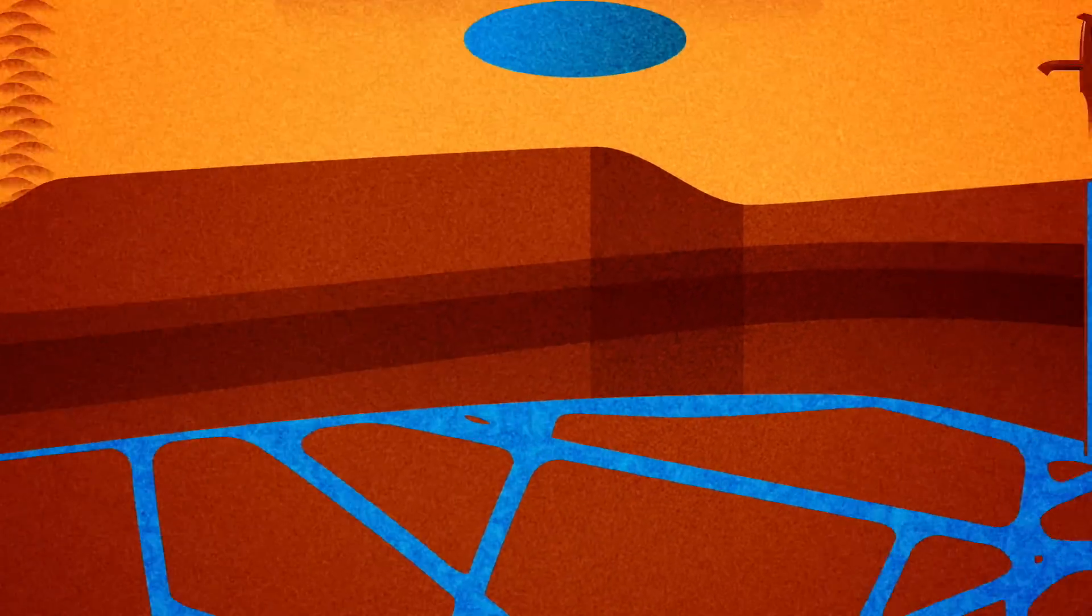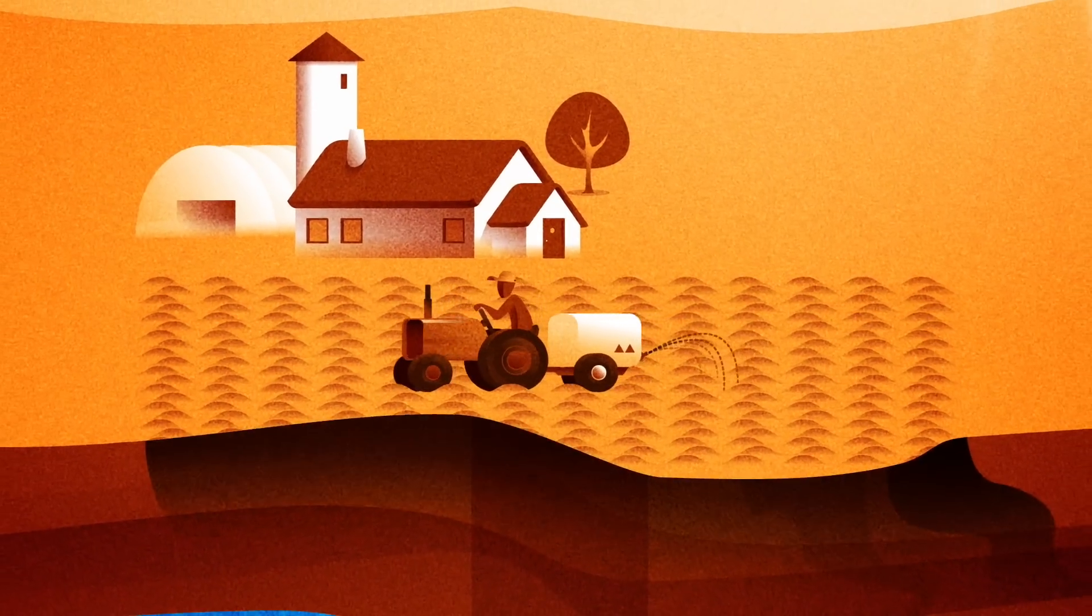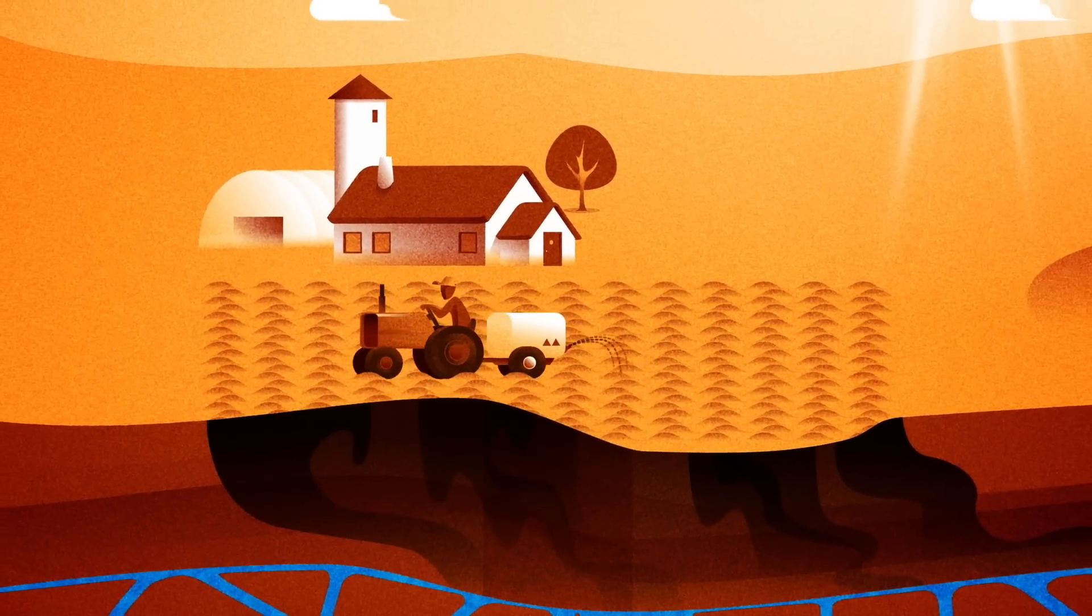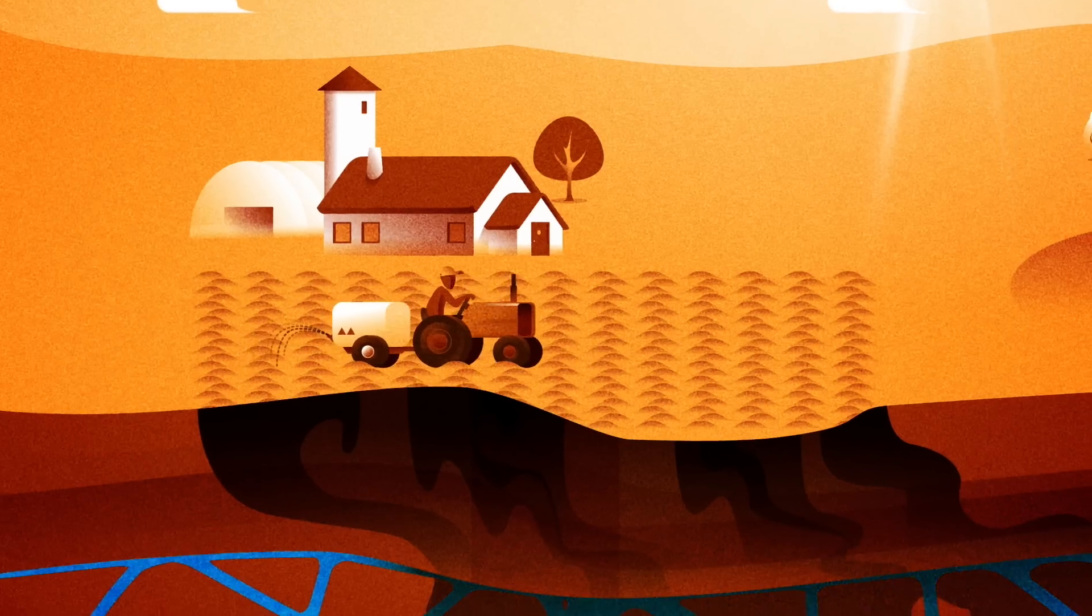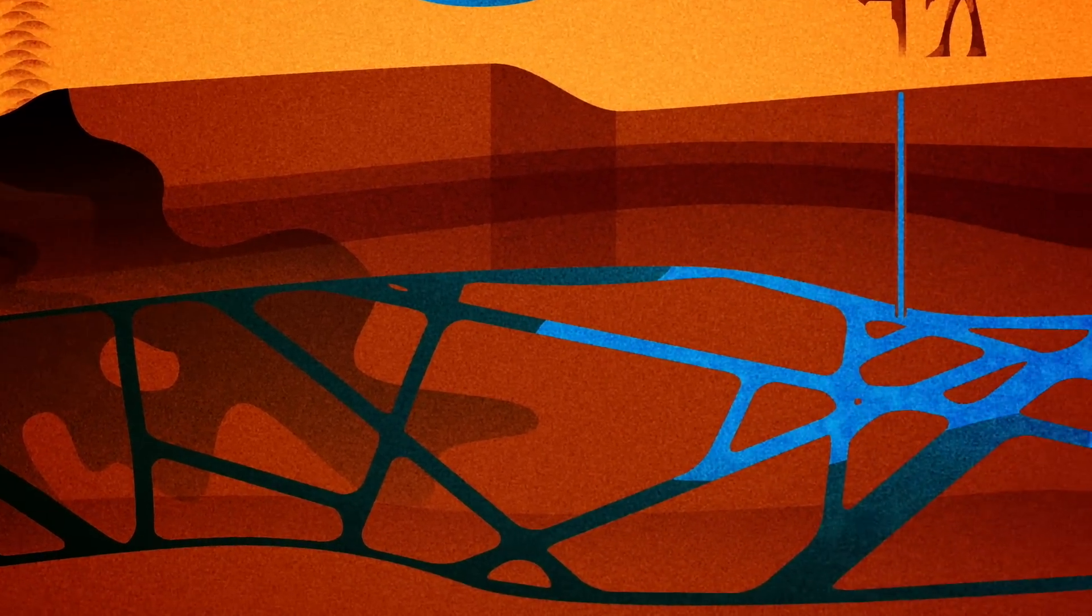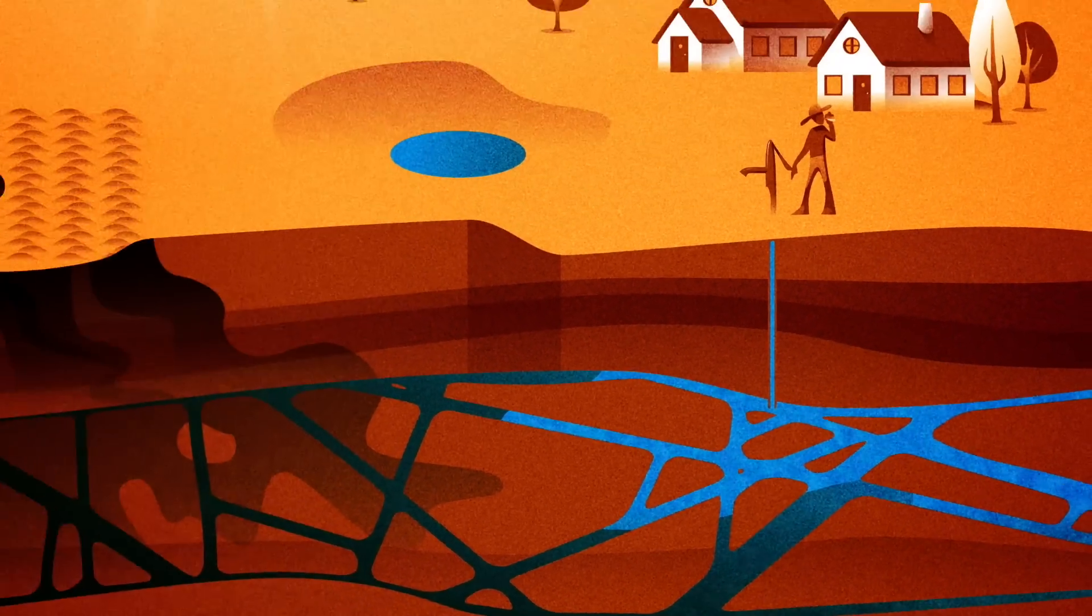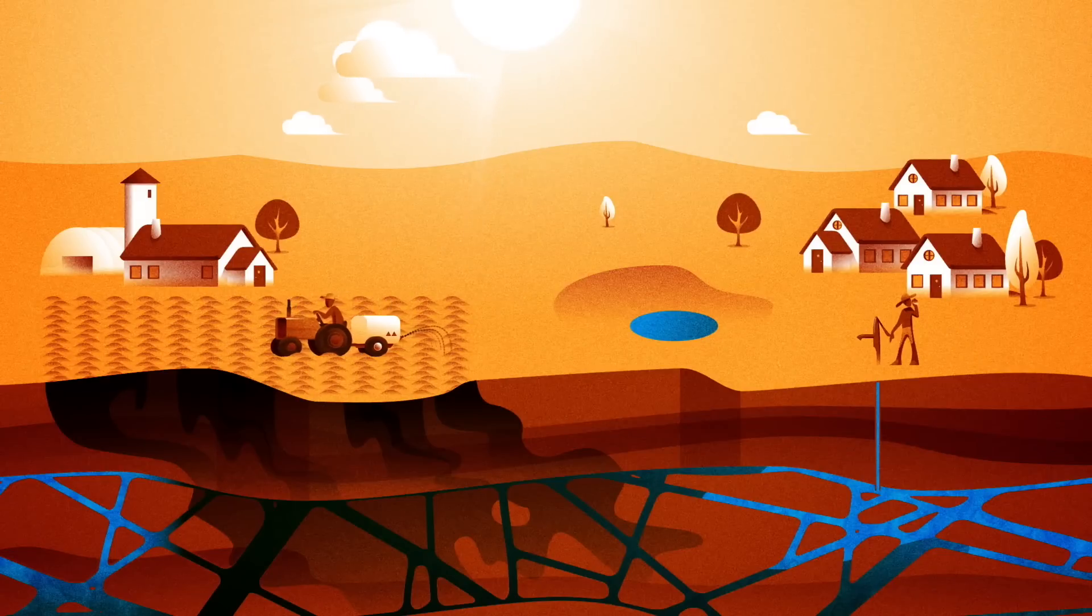Some communities may be polluting the groundwater reserves unknowingly through farming activities. A valuable resource could become seriously contaminated, just because we can't see what effects our actions have below ground. This has consequences for everyone using the aquifer.